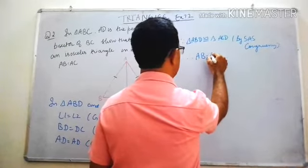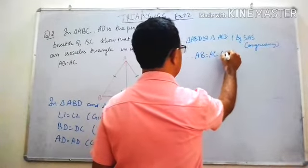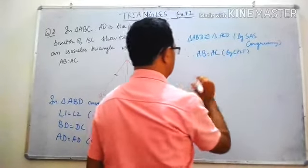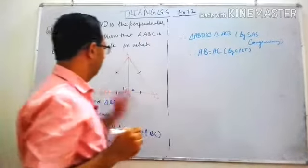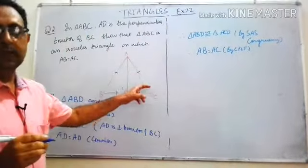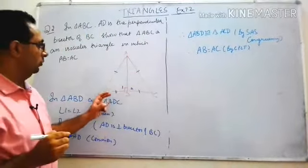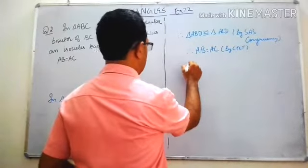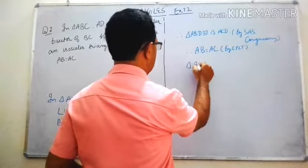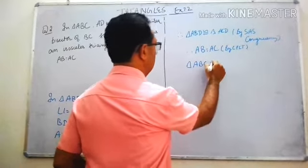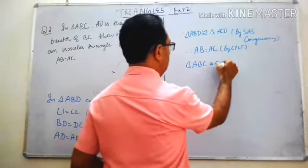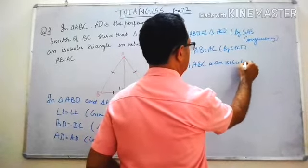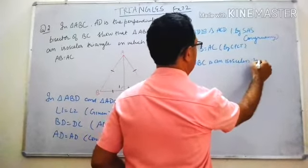Since both triangles are congruent, AB is equal to AC by CPCT. Therefore triangle ABC is an isosceles triangle.